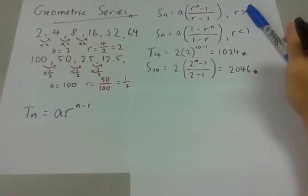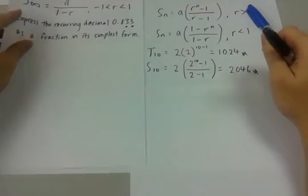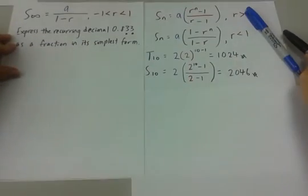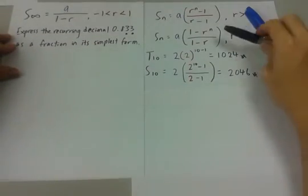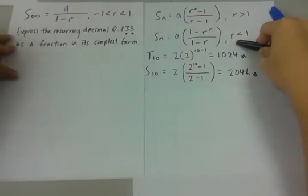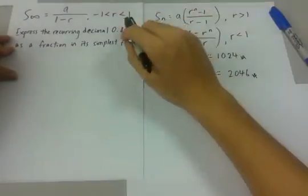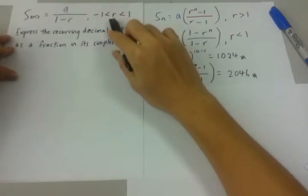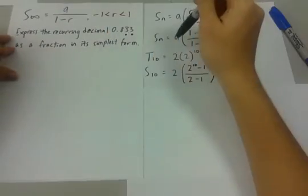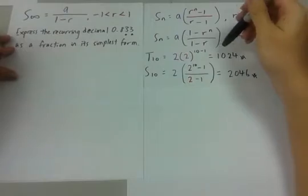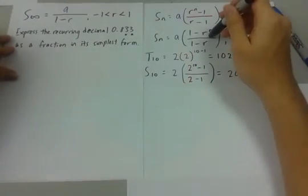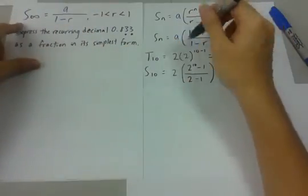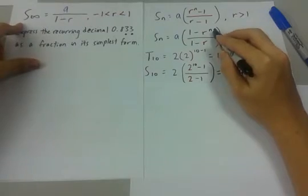Now, let's proceed with the sum to infinity. Sum to infinity is derived from the second formula here. Sum of infinity only occurs when R is in between negative 1 and 1, most probably a fraction, a proper fraction. If any ratio is raised to an infinitely high number, N equals infinity.